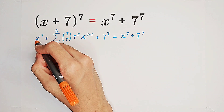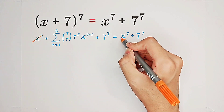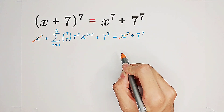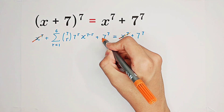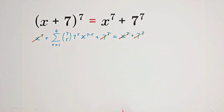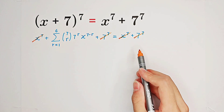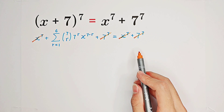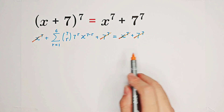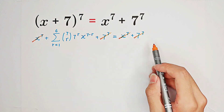We can find that x to the power of 7 cancels out, and 7 to the power of 7 cancels out. So what we have is the middle sum equals 0. We just need to solve this equation — this sum equals 0.